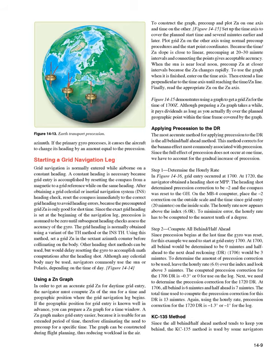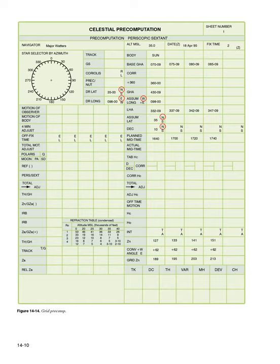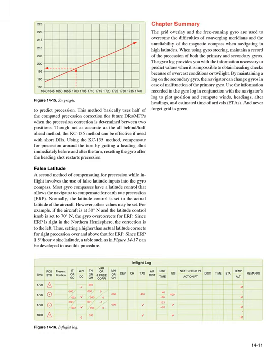KC135 method. Since the all-behind/half-ahead method tends to keep you behind, the KC135 method is used by some navigators to predict precession. This method basically uses half of the computed precession correction for future DRs/MPPs when the precession correction is determined between two positions. Though not as accurate as the all-behind/half-ahead method, the KC135 method can be effective if used with short DRs. Using the KC135 method, compensate for precession around the turn by getting a heading shot immediately before and after the turn; resetting the gyro after the heading shot restarts precession.